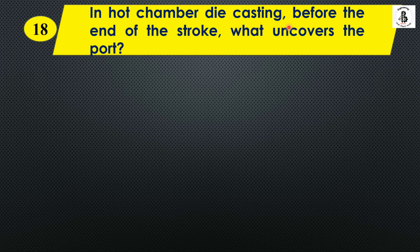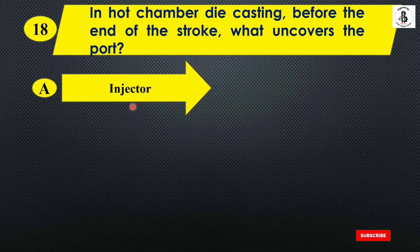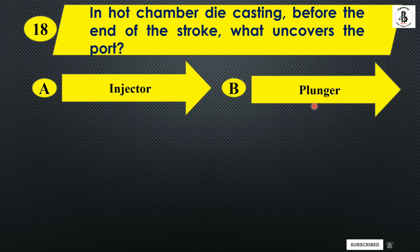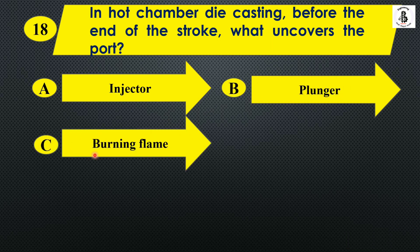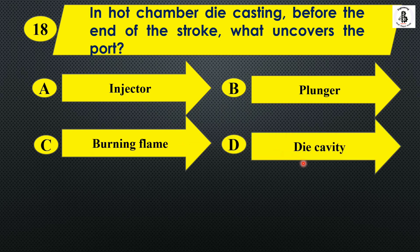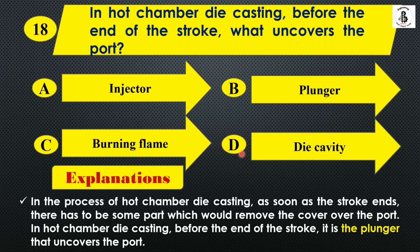Question eighteen: In hot chamber die casting, what uncovers the pot before the end of the stroke? Option A: Injector, Option B: Plunger, Option C: Burning flame, Option D: Die cavity. In hot chamber die casting, as the stroke ends, the plunger uncovers the pot. The answer is Option B: Plunger.